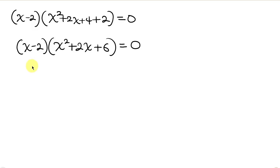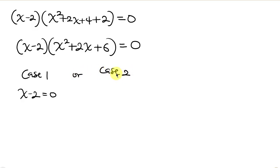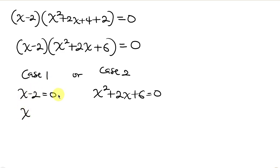So we have two cases. For Case 1, we have x minus 2 equal to 0. Moving negative 2 to the right, it becomes positive 2, so x equals 2.